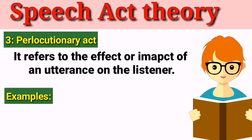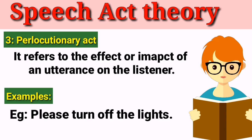For example, if a speaker says 'please turn off the lights' — this sentence has meaning and a specific structure, so it is a Locutionary Act. The speaker says it because he has the intention to have the lights turned off, so this is the Illocutionary Act. When the listener hears it and goes to turn off the light, that is the Perlocutionary Act — because the sentence had a specific effect on the other person.